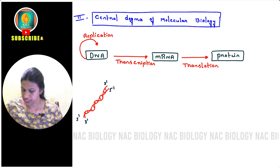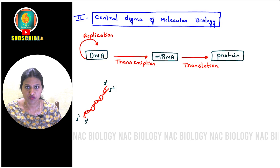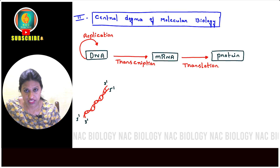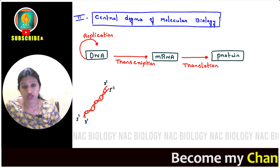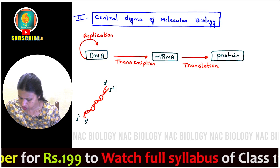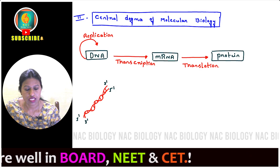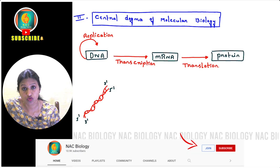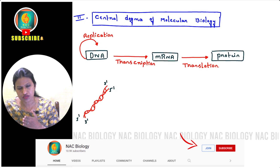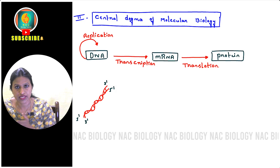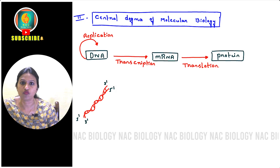Here I have written a schematic of the central dogma of molecular biology. The DNA has two strands — one from 3' to 5' direction and another from 5' to 3' direction. This DNA undergoes replication, meaning it duplicates to produce one more copy. The exact DNA nucleotides and the information are replicated to form a new copy — this is what we call DNA replication.